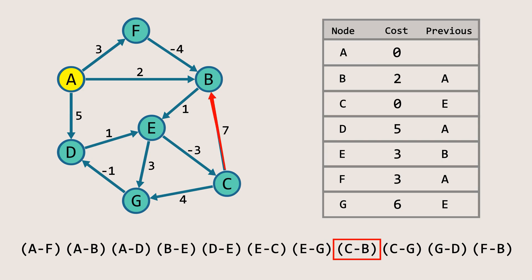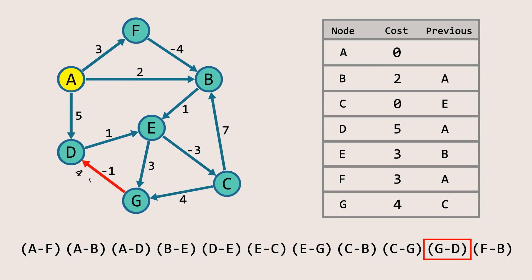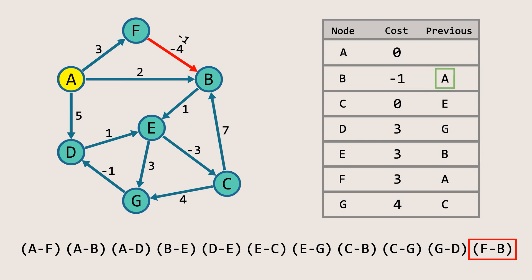Next, for the edge CB, the cost of node C is zero and the weight of the edge is seven, giving a total of seven. This is not less than the current cost of node B, so we will not update it. For the edge CG, the cost of node C is zero and the weight of the edge is four, giving a total of four. This is less than the current cost of node G, so we update the cost of node G to four and set node C as the previous node for node G. For the edge GD, the cost of node G is four and the weight of the edge is minus one, giving a total of three. This is less than the current cost of node D, so we update the cost of node D to three and set node G as the previous node for node D. For the edge FB, the cost of node F is three and the weight of the edge is negative four, giving a total of negative one. This is less than the current cost of node B, so we update the cost of node B to negative one and set node F as the previous node for node B. Now the first iteration is over, so we proceed to the next iteration.